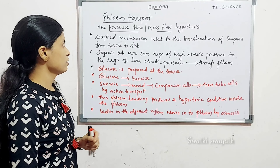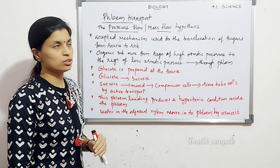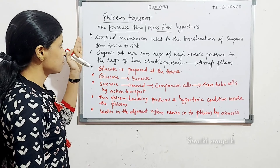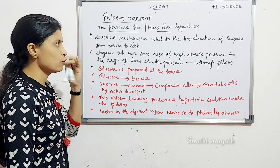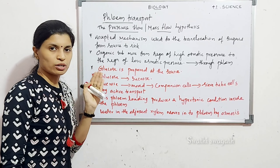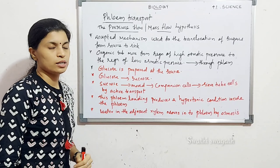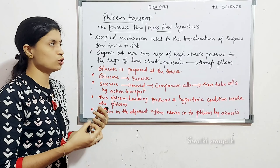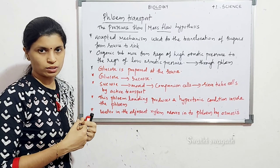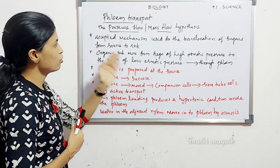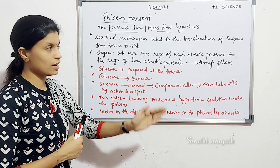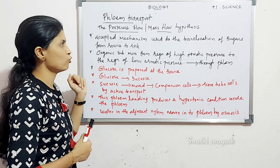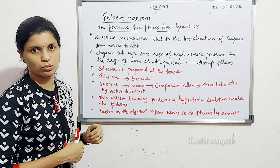The next important topic is the pressure flow hypothesis, otherwise called the mass flow hypothesis. It is an accepted mechanism used for the translocation of sugar from source to sink. Sugar is translocated from source — the place where food is produced — to the sink.